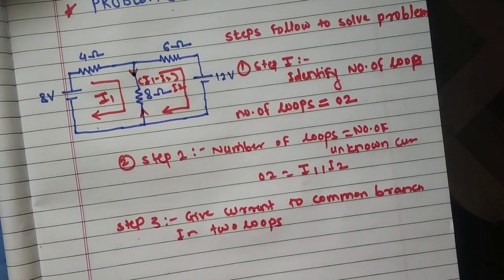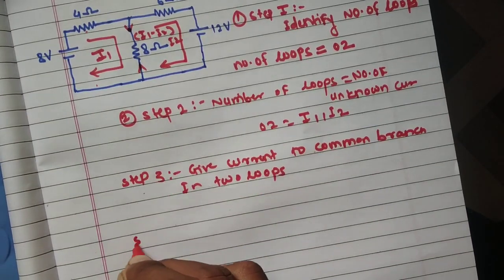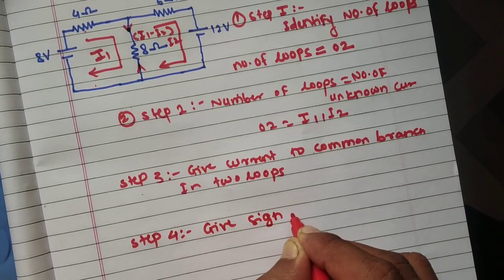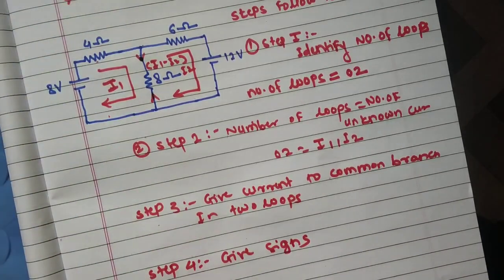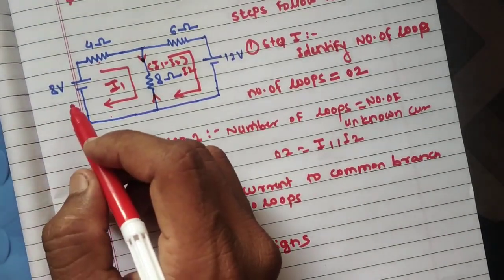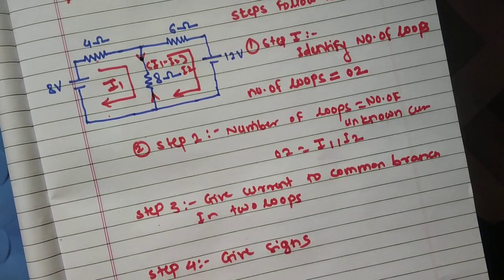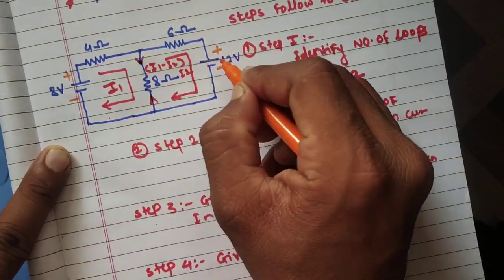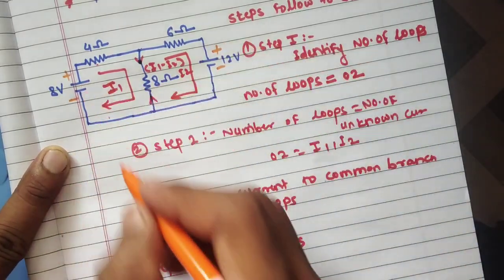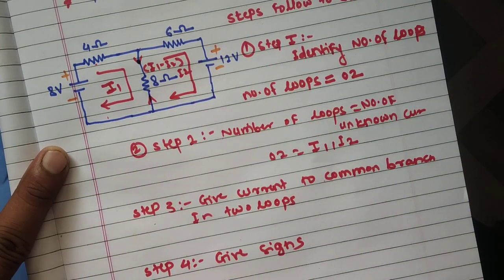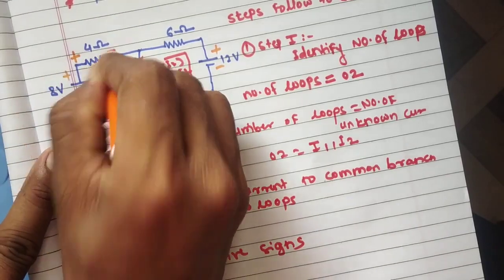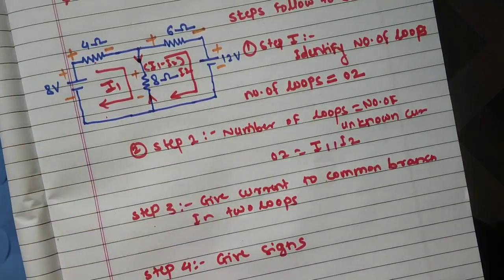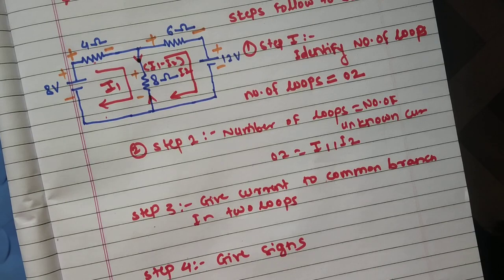Step four: give sign convention or give signs. So voltage, look at voltage supplies. The sign convention already explained last day. So it's plus minus, plus minus, plus minus with respect to i2 resistance. This is a common sign convention: plus minus, plus minus, and plus minus.